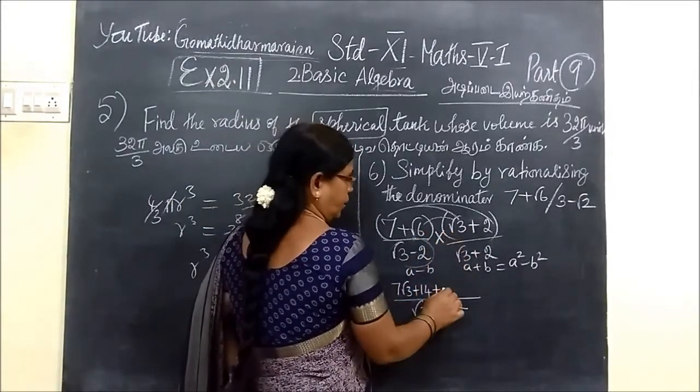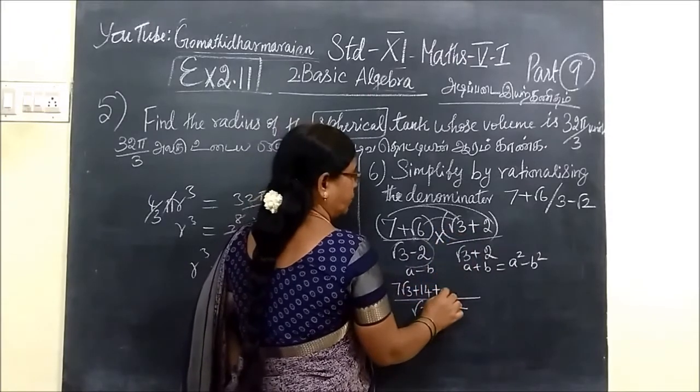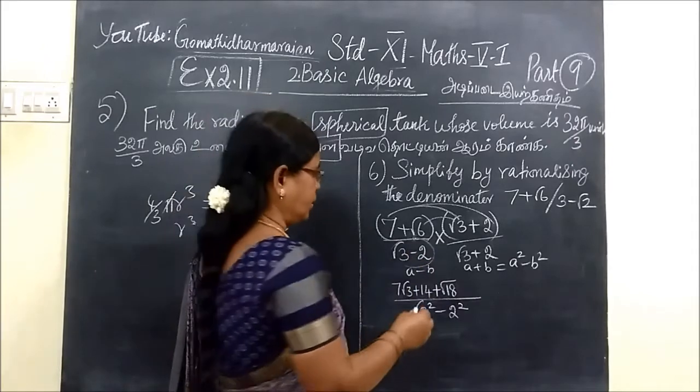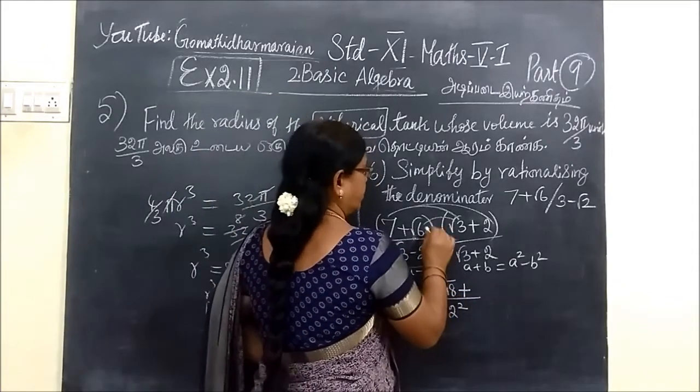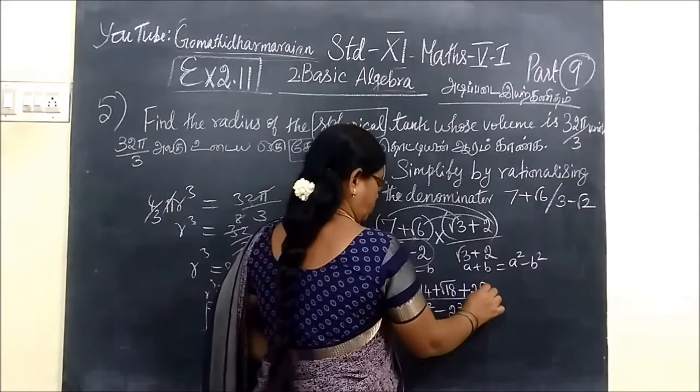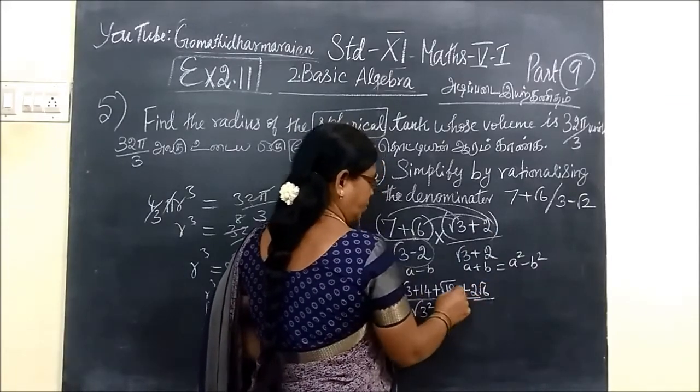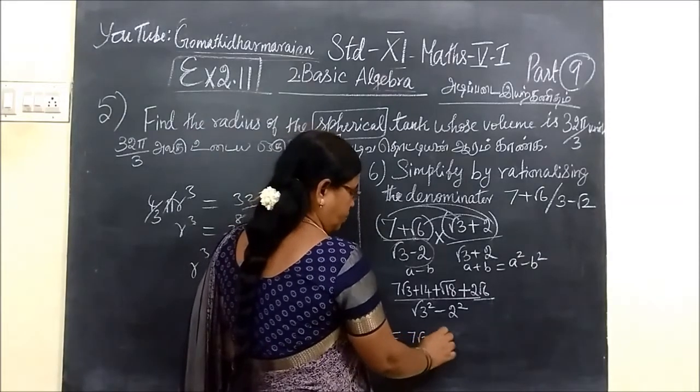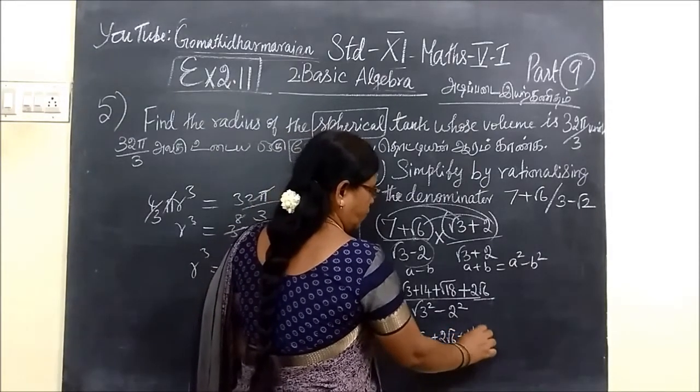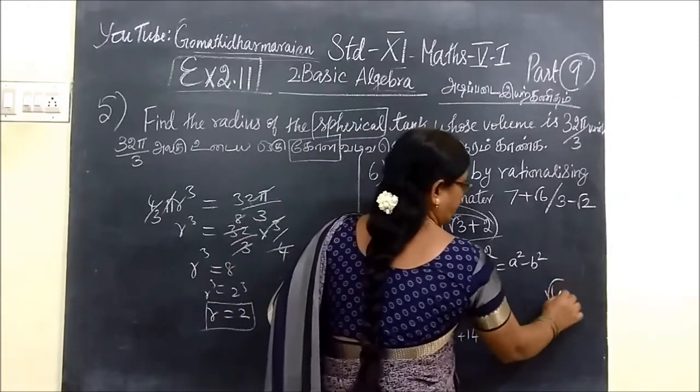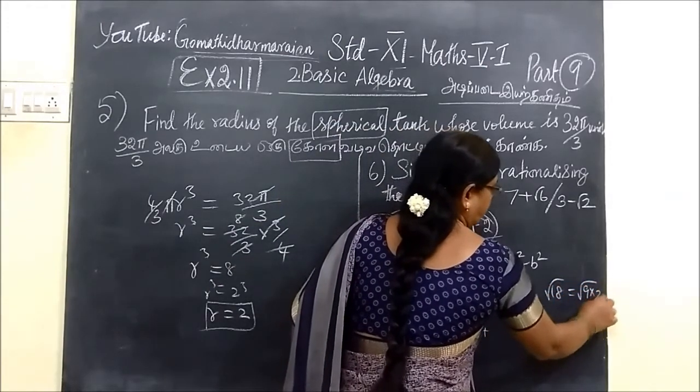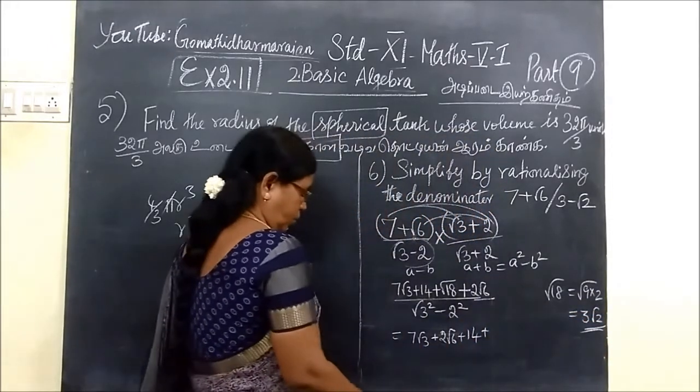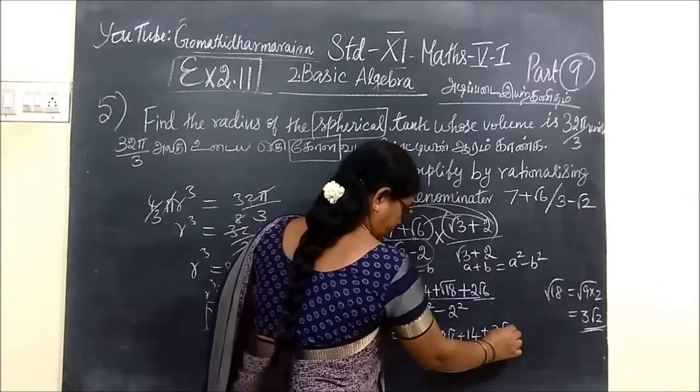Here you multiply by 7, so 7 root 3 then plus 14. Then multiply by root 6. Then plus root 3 into root 3, so root 6 into root 3 equals root 18. Then plus root 6 into 2, so 2 root 6. Here are the unlike terms. So this is equal to 7 root 3 plus 2 root 6 plus 14. This root 18 can be written as 9 into 2, so this is equal to 3 root 2.